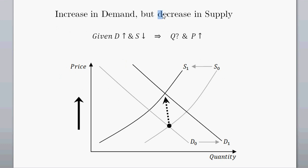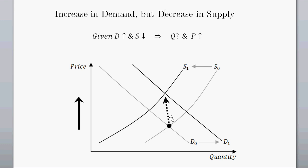To summarize: when we have an increase in demand but a decrease in supply, you can see D sub nought and S sub nought give us an initial equilibrium, but when we increase demand and decrease supply, we have a new equilibrium that definitely has a higher price. The quantity could shift either way — increase, decrease, or stay the same — depending on how big the shifts in demand and supply were, and the elasticity of those curves.